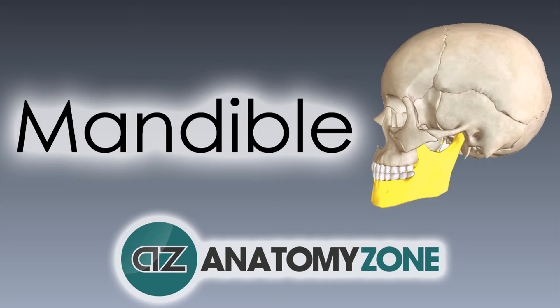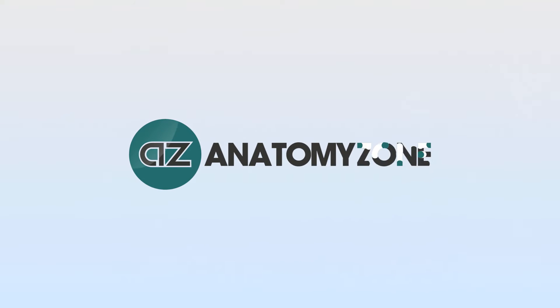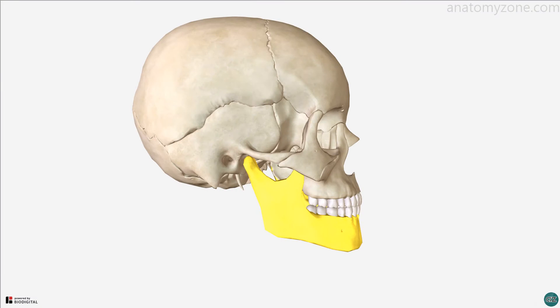Hi, this is Peter from Anatomy Zone, and in this video we're going to take a look at the key features of the mandible. The mandible is the lower jawbone and is the largest and strongest bone of the face. The term mandible is derived from the Latin mandere, which means to chew.